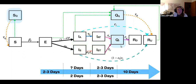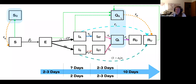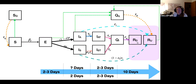For our quarantine compartments, we have QI — isolation — which after 10 days transitions into RD, or recovered detected. We also have QQ, our quarantine compartment, where anyone who started as either an E, I, or R will end up. After 14 days of quarantine, we assume they're recovered and they go to recovered undetected. So we end up with two R compartments: recovered detected, which we can measure, and recovered undetected, which we don't have a good idea of how many individuals fall into.